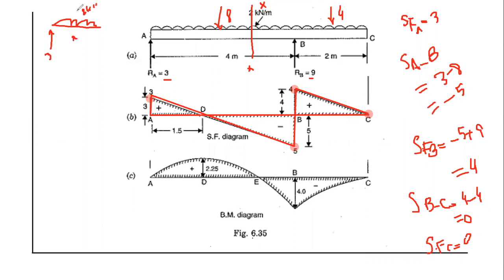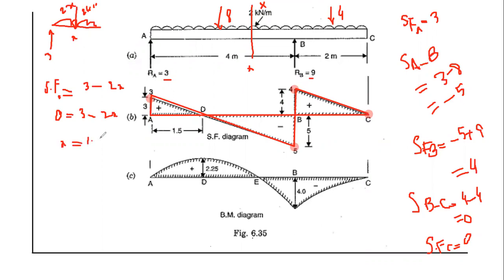Shear force at any section X: resultant of UDL is 2 into X = 2X. So shear force at any section X is 3 minus 2X. Setting shear force to zero: 3 minus 2X = 0, so X = 1.5 meters. At this point, the bending moment will be maximum. Let's calculate the maximum bending moment.